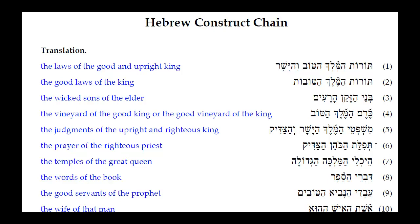We put 'the prayer' because HaKohane has a definite article on it, and so the construct noun will also be definite. Remember: construct nouns' definiteness is determined by the definite article — or lack thereof — on the absolute noun.